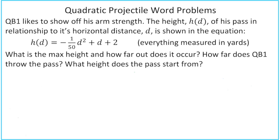So let's take a look at this first problem. QB1 likes to show off his arm strength. The height, h of d, of his pass in relationship to its horizontal distance, which will be d, is shown in the equation: h of d equals negative 1/50 d squared plus d plus 2. Everything in this problem is going to be measured in yards. The questions are, what is the max height and how far out does it occur? How far does QB1 throw the pass? And what height does the pass start from?